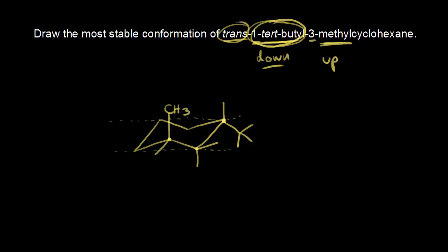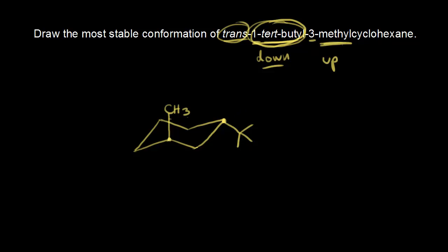Let's clean up the drawing by erasing the extra bonds and dotted lines to make it look a little prettier. Here is the most stable conformation of trans-1-tert-butyl-3-methylcyclohexane.